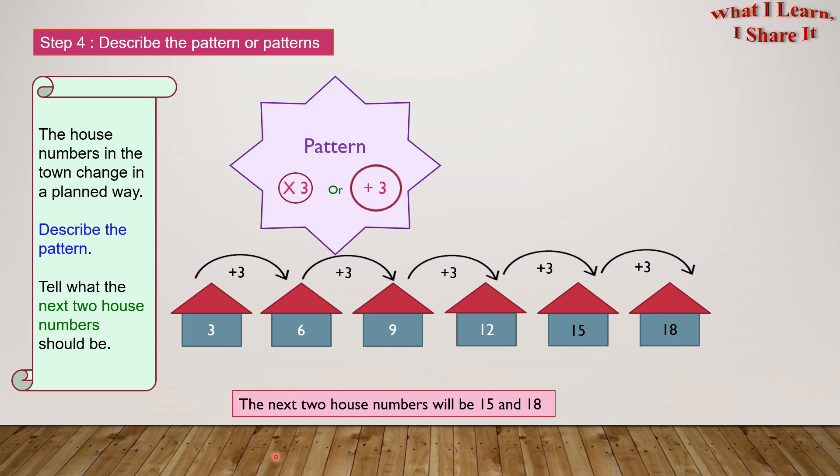So the next two house numbers will be 15 and 18. Yay! We solved the problem!